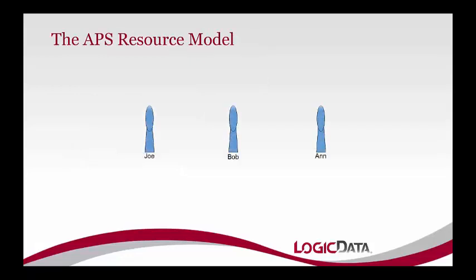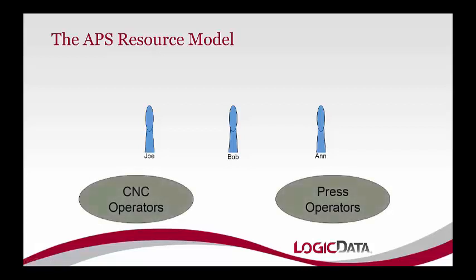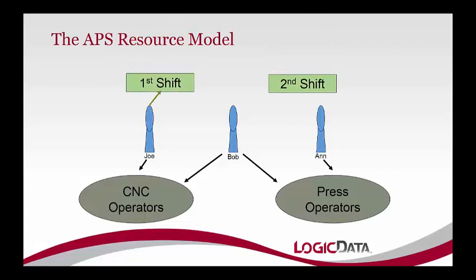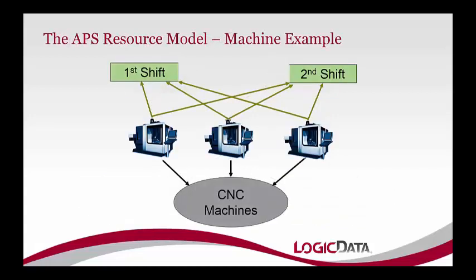People can have multiple skill sets, so we associate them with different resource groups. For example, Joe is a CNC operator, Ann is only on the brake press, but Bob has been trained for both — so Bob is a member of both groups. APS selects resources based on what people are already booked to and what shift they work. Similarly for machines: three similar CNCs might all work both shifts, so they're all members of the same CNC group, and APS picks one from the appropriate group when it needs a CNC machine for an operation.